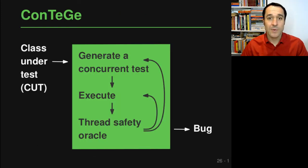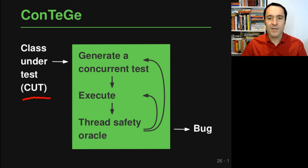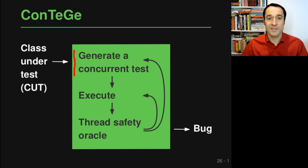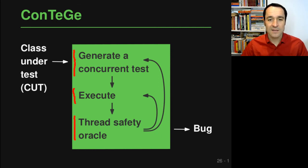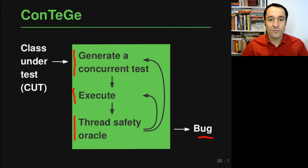To detect this kind of bug, ContiG automatically generates test cases that test the thread safety of a given class. The input is the class under test, and the output is either nothing or a report about a bug found. There are three main steps: first, generate a concurrent test; second, execute this test; and third, apply a thread safety oracle that looks at the execution and determines whether there was a thread safety violation. If there was one, it's reported as a bug. If not, the approach either re-executes the same test or goes back to generating another test.